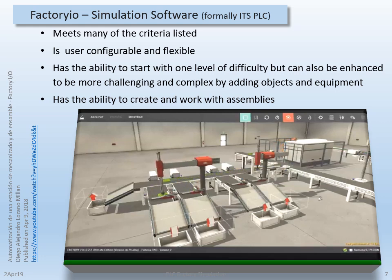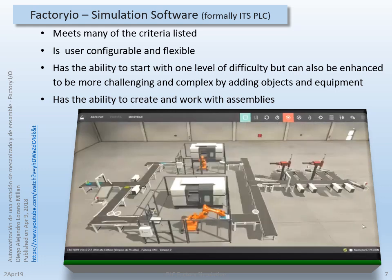Again, we can also start with one level of complexity and then enhance the factory to be more challenging and complex by adding components and equipment such as more conveyors, boxes, or other types of assemblies.